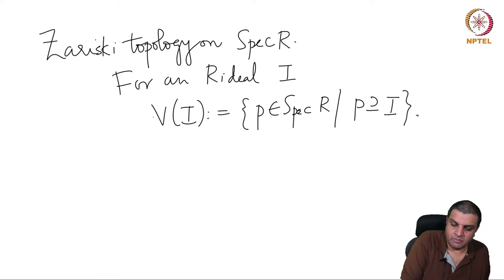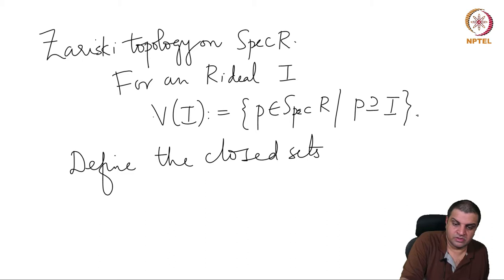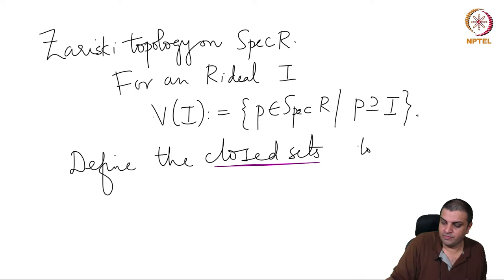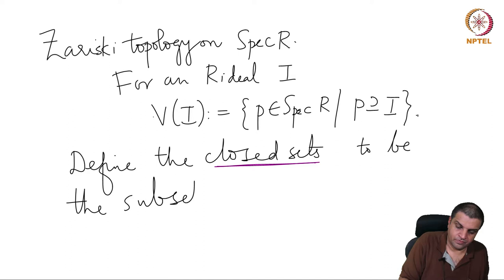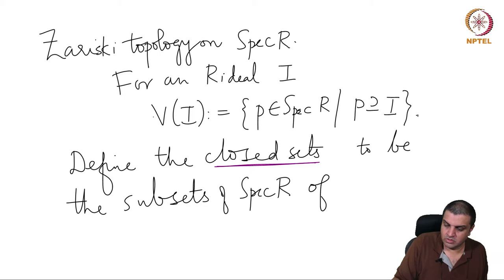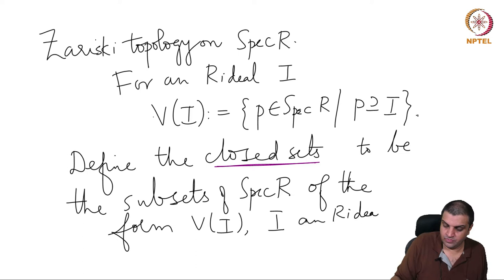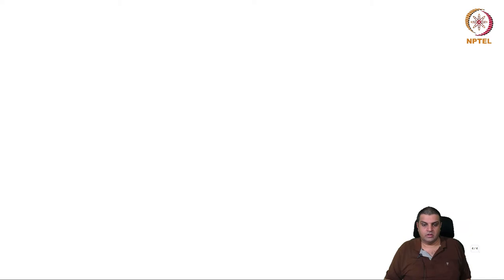We define V of I to be this. So define the closed sets of the topology to be the subsets of the form V of I, where I is any ideal. These are the closed sets.